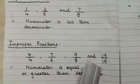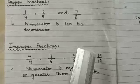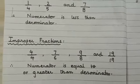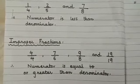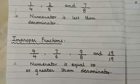The last one is 19 by 19. The numerator is equal to the denominator. That means this fraction is also an improper fraction.